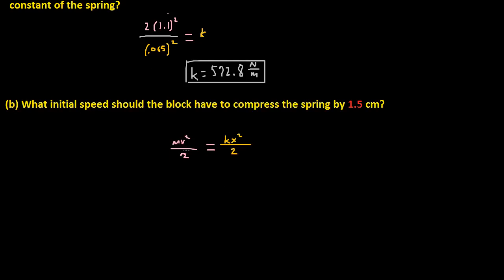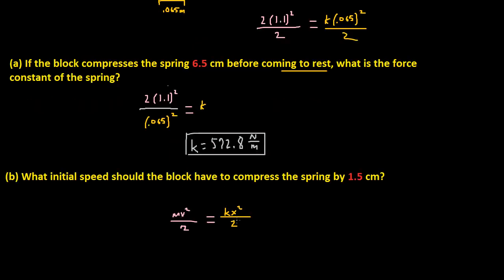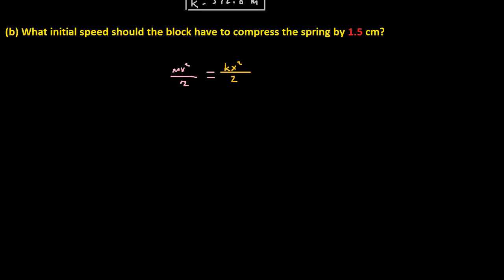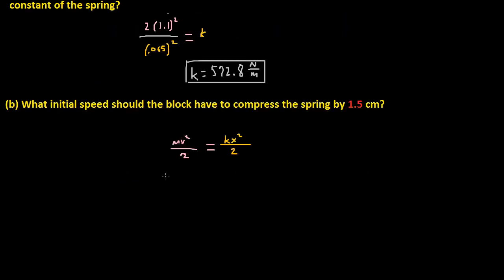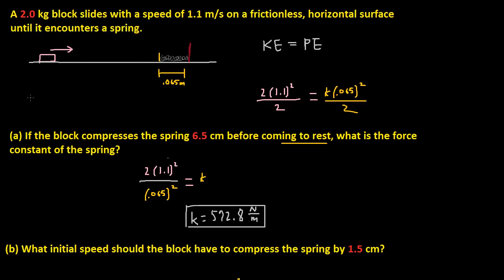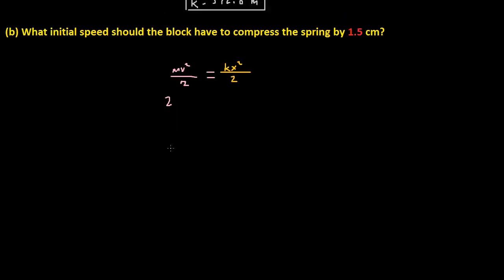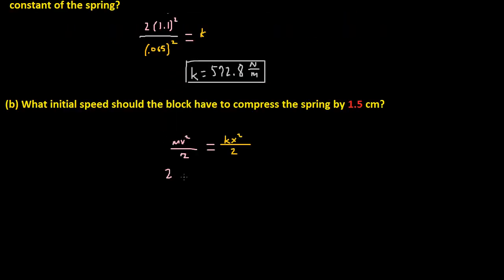So we know that all of the kinetic energy is getting converted into potential energy when it's coming to rest. So mass is 2. And the distance is 1.5 for me. I have mass of 2. And the distance is 1.5 for me. So 2V squared over 2. Well, 2 over 2, those things cancel out.